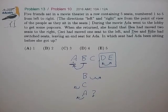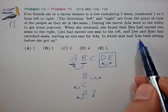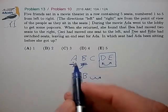So that quickly leads us to the answer of this question. In which seat had Ada been sitting before she got up? It must have been seat location number two.